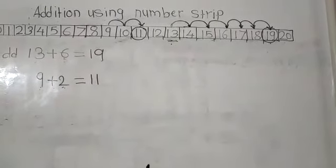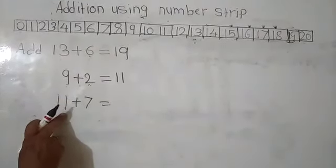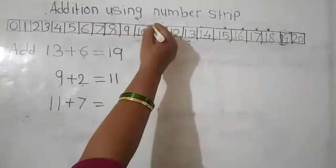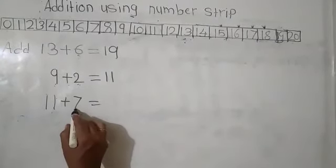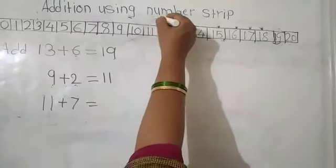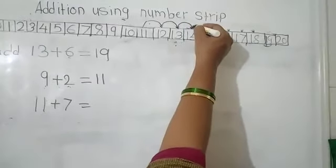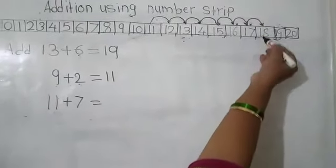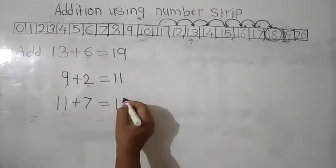Now let's see one more example. Here we have 11 plus 7. We have to add 7 to 11, so we start from 11 and go forward 7 steps. Count with me: 1, 2, 3, 4, 5, 6 and 7. And we arrive at number 18. So 11 plus 7 is equal to 18.